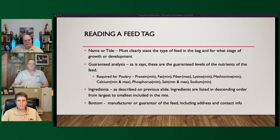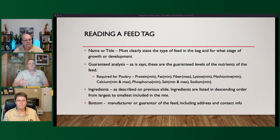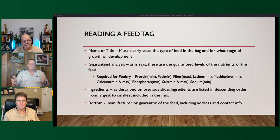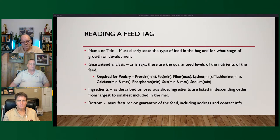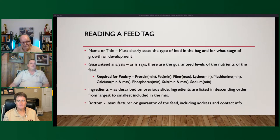Below the guaranteed analysis is your ingredient listing. Again there are some generic terms that can be used — like 'processed grain products' we discussed. Ingredients are listed in descending order from largest to smallest, if the label was made correctly. I see a lot of labels that are not in accordance with the laws. I wouldn't encourage you to run up to the feed mill manager and say 'this label is not right' — but if they can't label their feed correctly, what are the chances they're making it correctly?